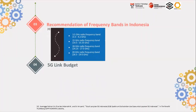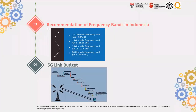Number four, link budget factor. 5G and 4G have no difference in the basic concept. The budget involves two types of factors. First, certain factors such as power, antenna gain, noise figure, SINR, penetration loss, and body loss. And second, uncertain factors such as log-normal fading margin, rain or snow margin, and interference margin. These factors do not occur anytime or anywhere, but their impact needs to be considered.